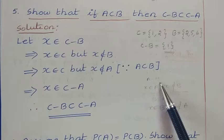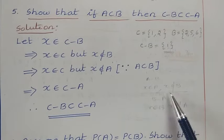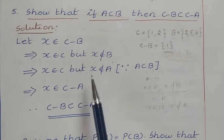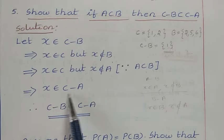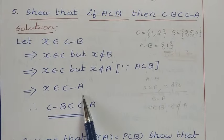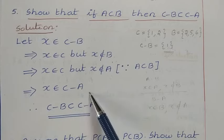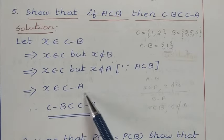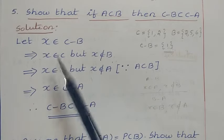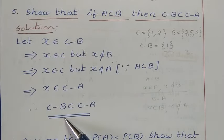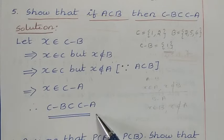Recall: A minus B means X belongs to A and X does not belong to B; B minus A means X belongs to B and X does not belong to A. So here we can write this as X belongs to C minus A. We assumed X belongs to C minus B and reached the conclusion that X belongs to C minus A. Therefore C minus B is a subset of C minus A.